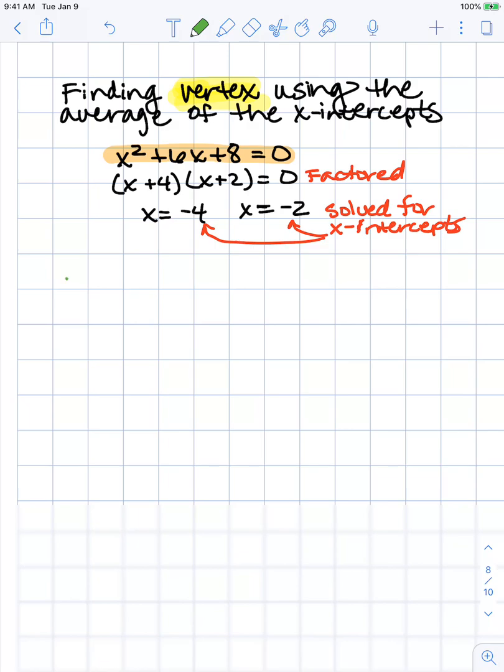To find the average, I take -4 and add it to -2, and divide by 2 because I added two numbers together. When I add these I get -6, and when I divide by 2 I get -3. So the x-coordinate of my vertex is -3.